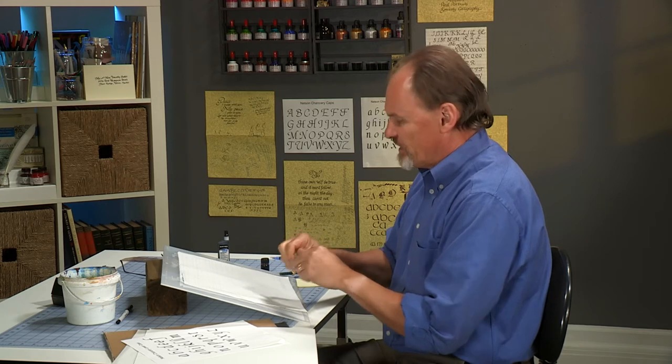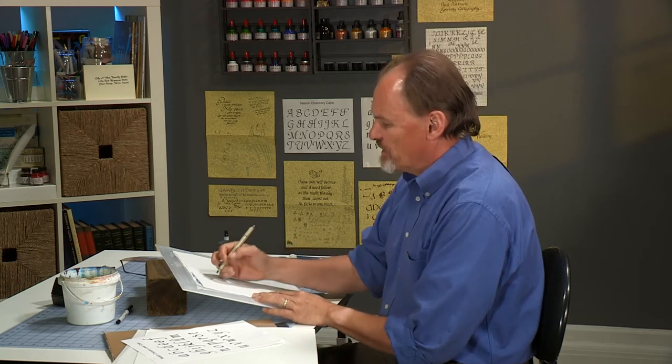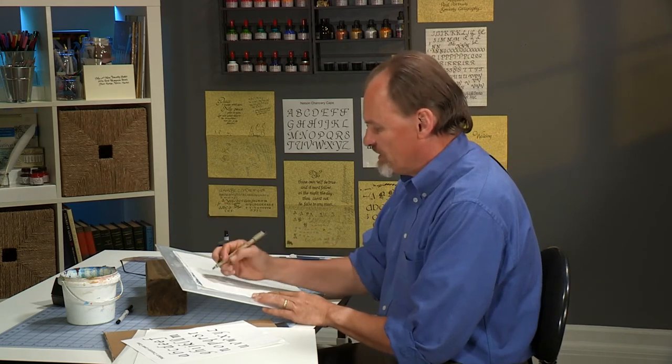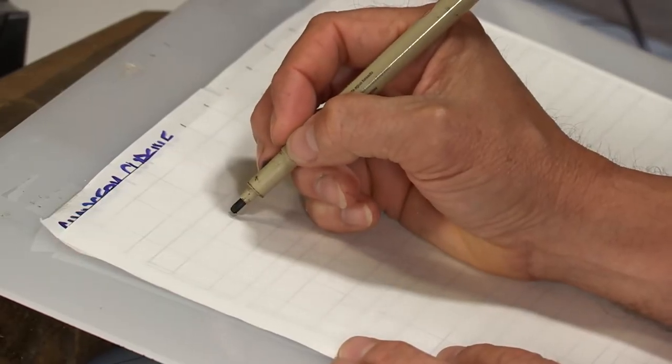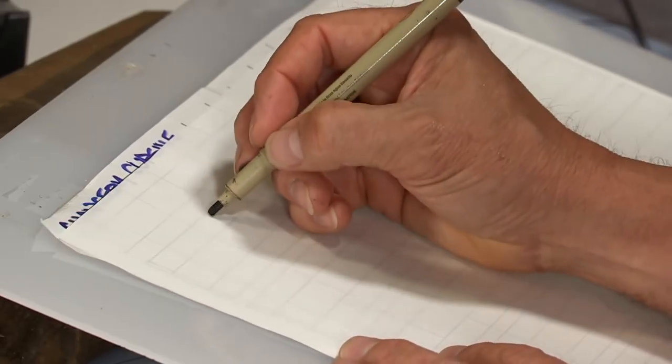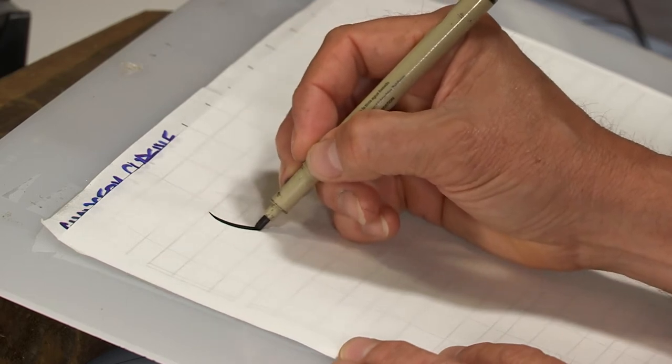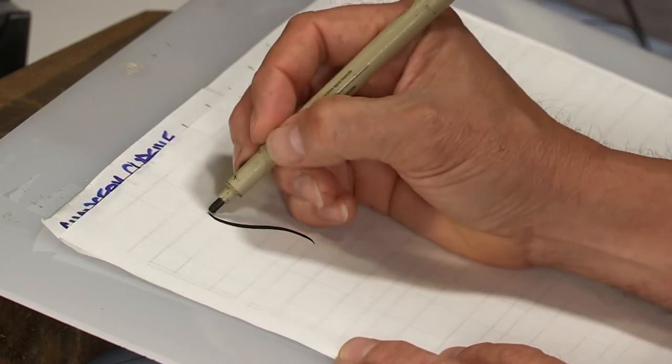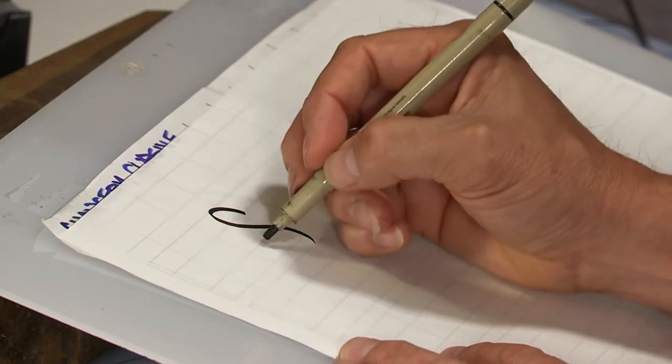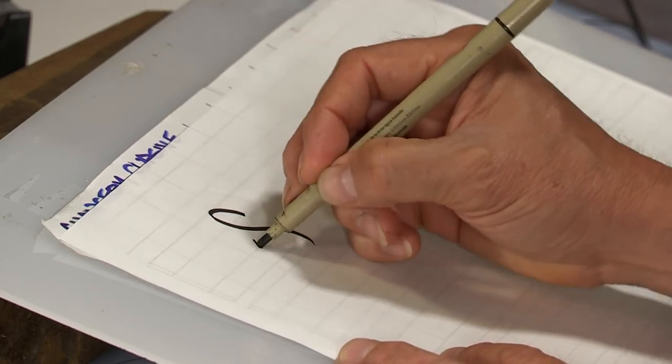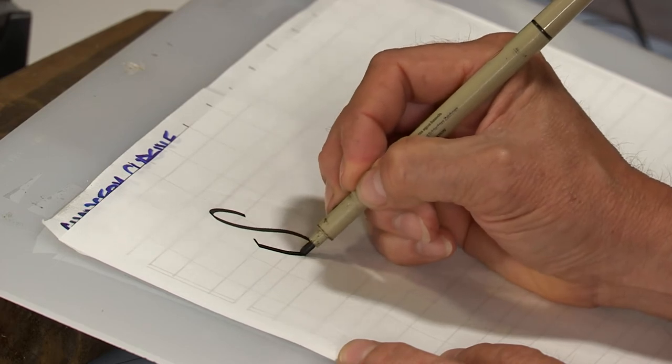But I'm also going to talk about how you connect the letter s and how you extend it if it's at the end of a line of type. Let's go back then to the capital letter s, beginning with the main curve.